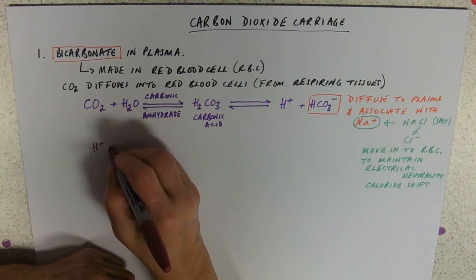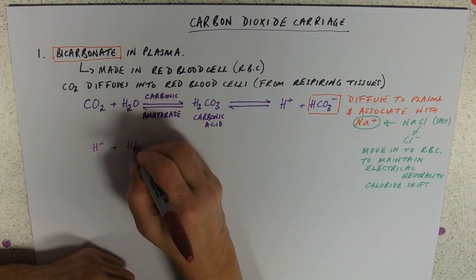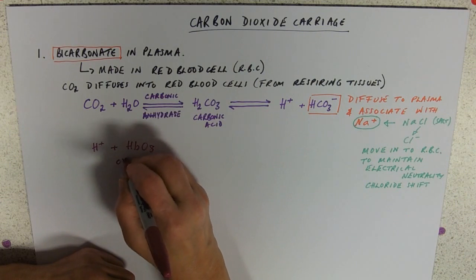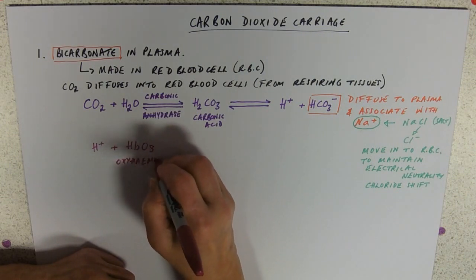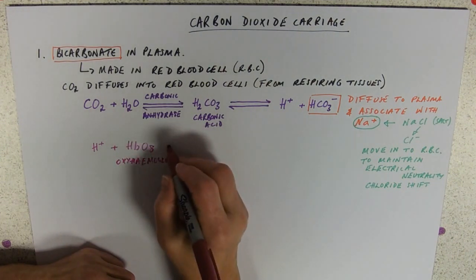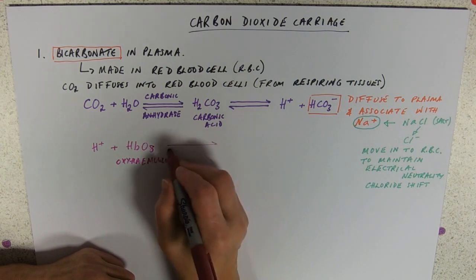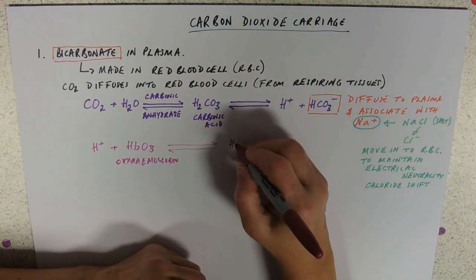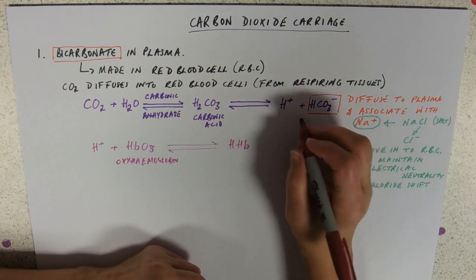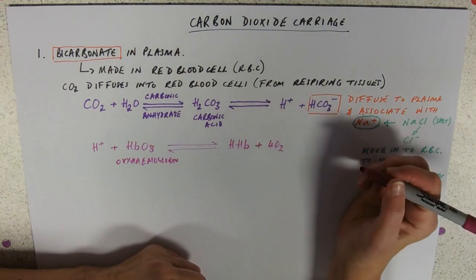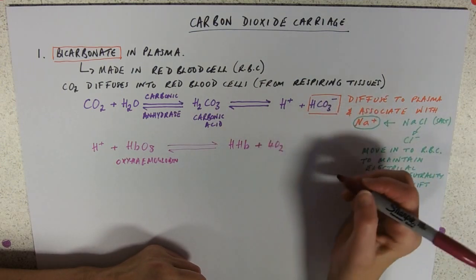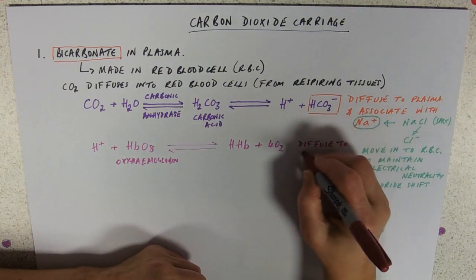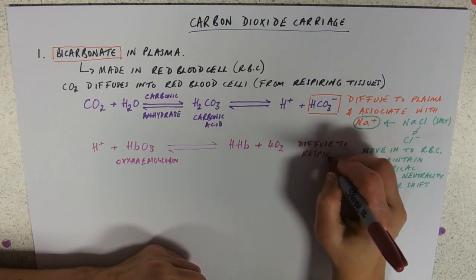So the second little equation we need to know. Our hydrogen ions are going to attach to oxyhemoglobin. And what they're going to do is they're going to, again reversible reaction, they're going to kind of displace that oxygen. So we'll get what we call HHB, which is hemoglobinic acid, plus our oxygen. And the oxygen of course is then going to diffuse along that concentration gradient. They're going to diffuse to the respiring cells.